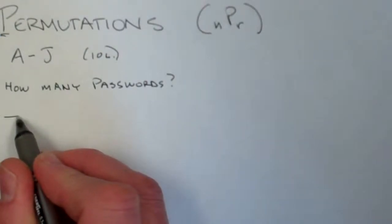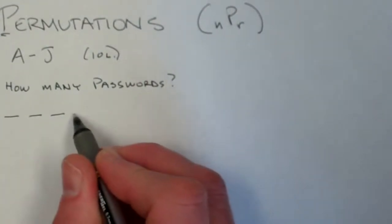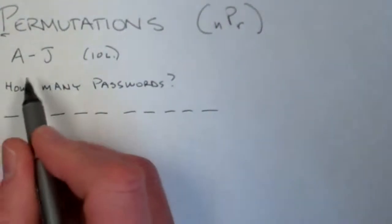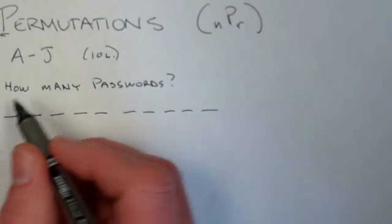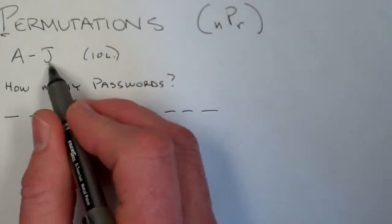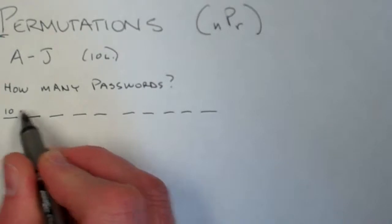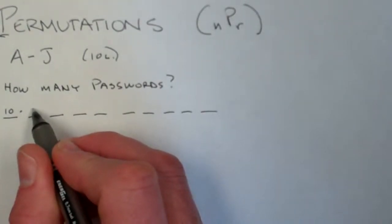So we would have ten blanks that we're filling in: one, two, three, four, five, six, seven, eight, nine, ten. And we would have ten choices for that first letter. It could be anything, A, B, J maybe. And when I filled in any one of those ten, I would have used it up, and so now I only have nine choices.